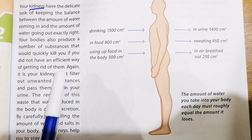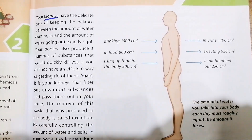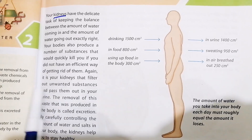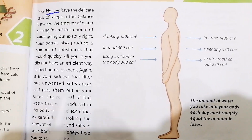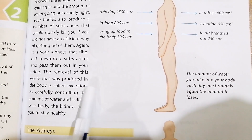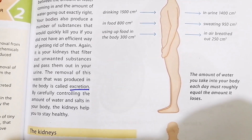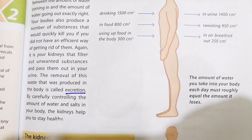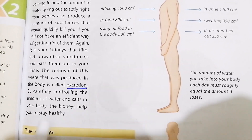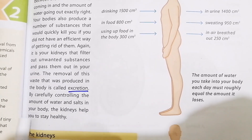If the kidneys are working, they will quickly get rid of the waste products. It is your kidney that filters out the unwanted substances and passes them out in your urine. The removal of this waste produced in the body is called excretion. By carefully controlling the amount of water and salt in your body, the kidneys help you to stay healthy.